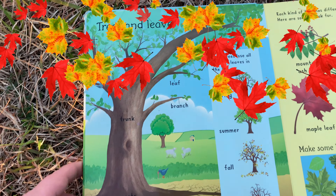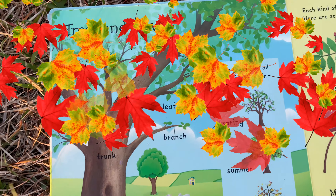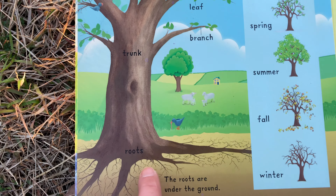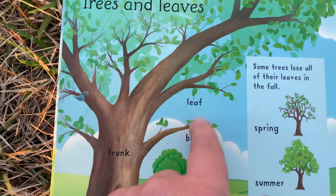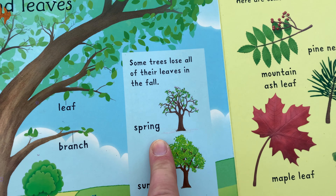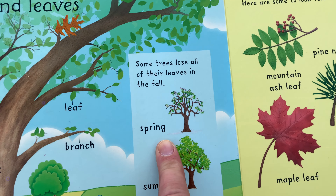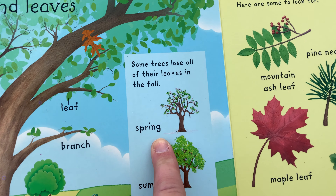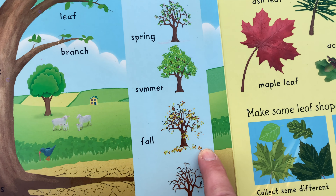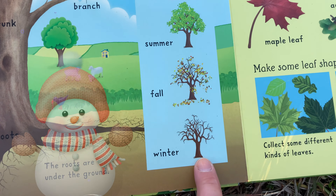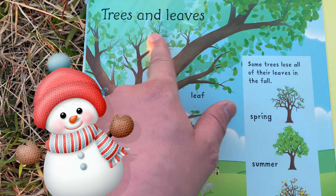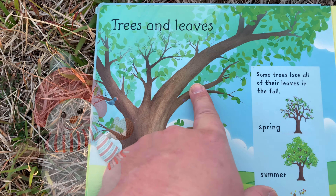Trees and leaves. We're looking at all different parts of the tree: the roots, the trunk, the branch, the leaf. And here it is in different seasons. Some trees lose all of their leaves in the fall. Spring, summer, fall — that's why it's called fall, right? Because the leaves fall in winter and the trees are bare. But not all trees lose their leaves, do they? Some trees don't.